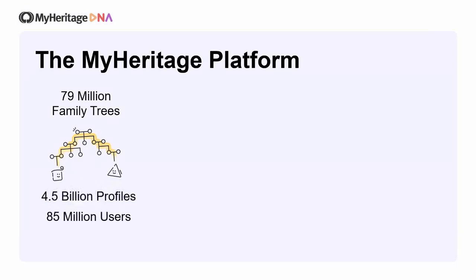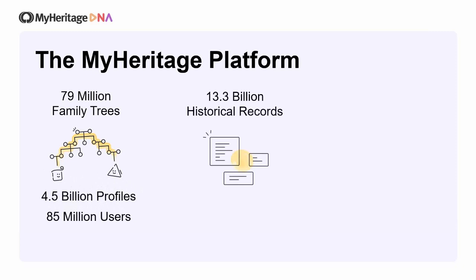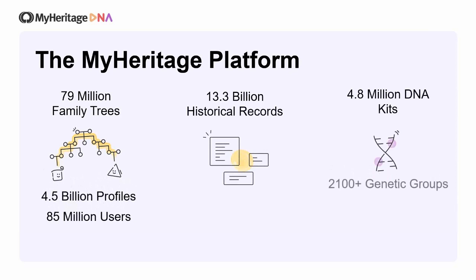MyHeritage actually started as a platform to build family trees, and today we have 79 million of those in our system. Then we came to the historical records area, and today we have 13.3 billion of those from all over the world. The third part is, of course, DNA, where we have 4.8 million DNA kits. All of them get matches between themselves. When you have a DNA kit on MyHeritage, you get matches with other people, but also the genetic groups, which are associated with the ethnicity estimation. MyHeritage has a little bit more than 2,100 genetic groups.